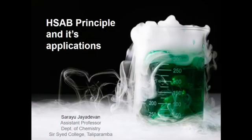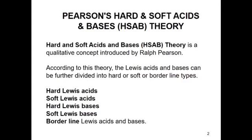Before we start our discussions on the HSAB principle, we should know what is meant by Lewis acids and bases. Lewis acids are substances which can accept an electron pair, whereas Lewis bases are substances which can donate an electron pair. According to HSAB theory, both Lewis acids and bases can be classified as hard and soft. There is another category of borderline acids and bases, which have intermediate properties of hardness and softness.